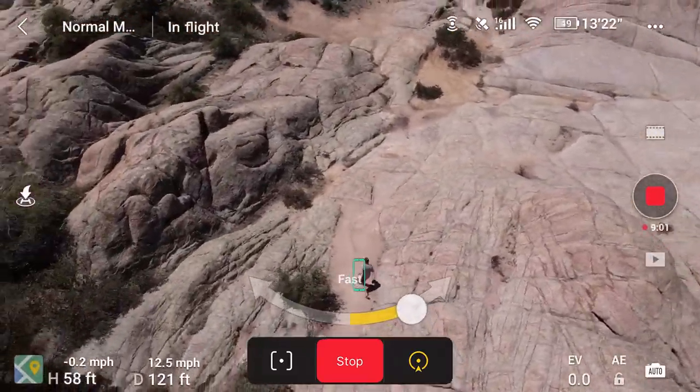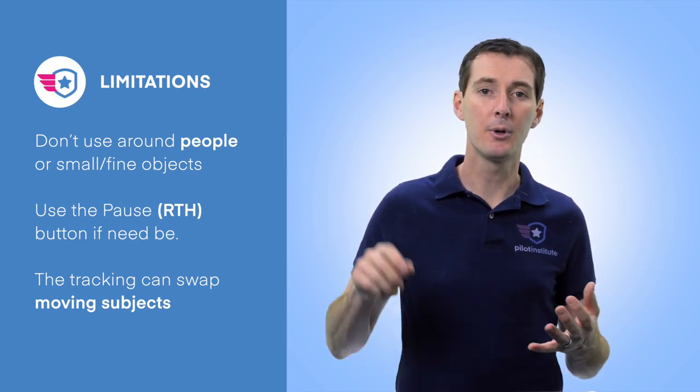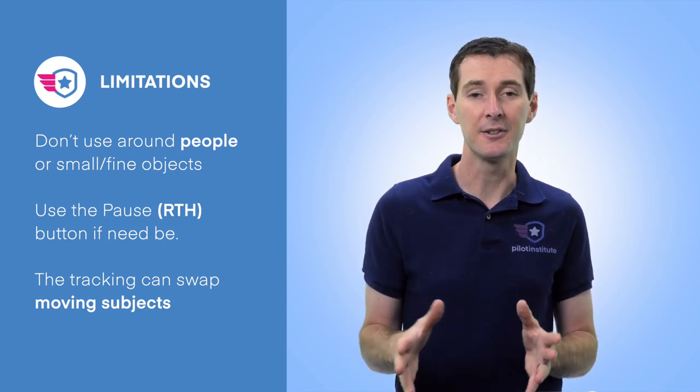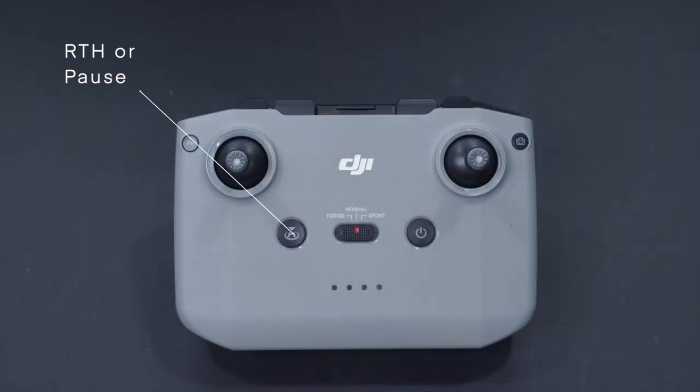Some limitations with the Focus Track options: be careful using these around people, since you may not be paying attention to your surroundings. Don't fly over people or near fine objects like branches — otherwise your drone ends up in a tree. These automated modes create great cinematic moves but you have to be careful. I'd recommend not using these if you haven't flown a drone before — get comfortable first. Also remember the RTH button on the remote controller will pause anything that's going on, so if the drone starts moving unexpectedly, push that button to stop it.